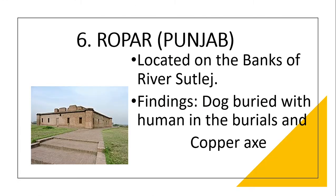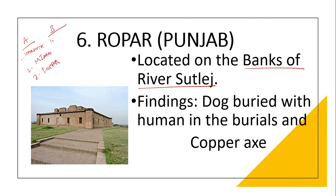Ropad is an important Indus Valley site located in Punjab on the banks of river Sutlej. Expect match-the-following questions pairing Harappa with Ravi, Mohanjodaro with Indus, and Ropad with Sutlej. The findings at Ropad include a dog buried with human beings in burials and a copper axe.